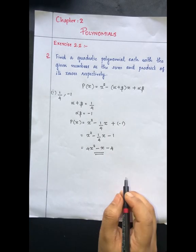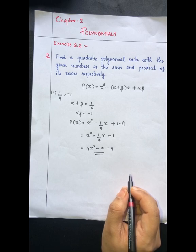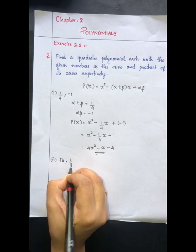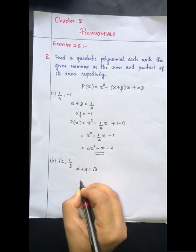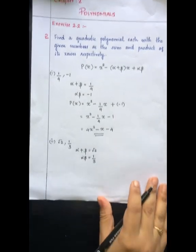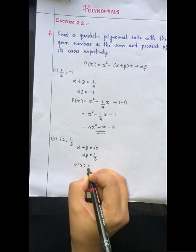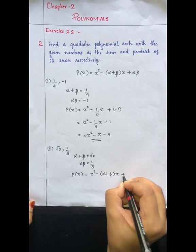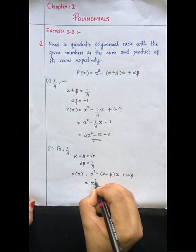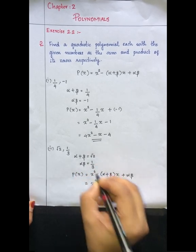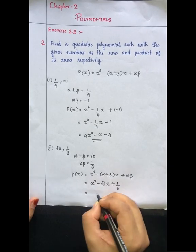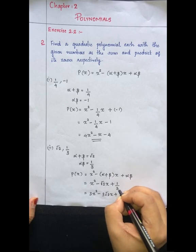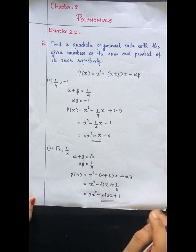The equation is: p(x) = x² minus (alpha plus beta) into x plus alpha into beta. For the next sub-question, the values are root 2 and 1/3. So alpha plus beta equals root 2 and alpha into beta equals 1/3. Substituting into p(x) = x² minus root 2x plus 1/3, then multiplying through by the LCM of 3 gives 3x² minus 3 root 2x plus 1.